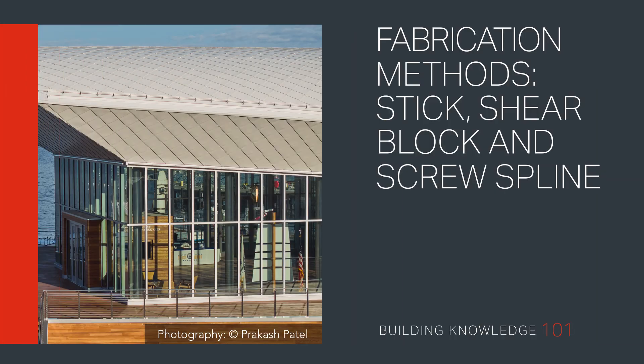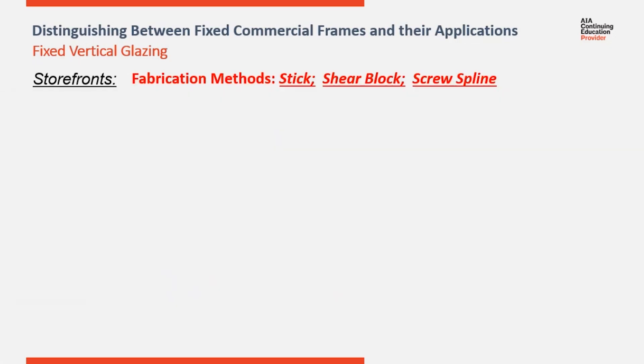Welcome to Building Knowledge 101. In this video, we cover the differences between typical fabrication methods: Stick, Shear Block, and Screw Spline. There are three main methods of fabricating storefront systems: Stick, Shear Block, and Screw Spline.